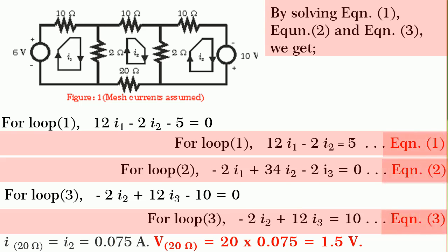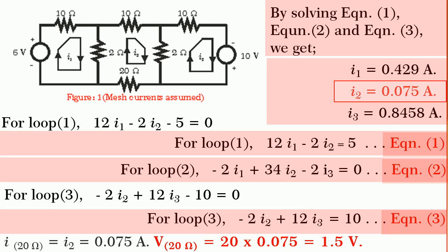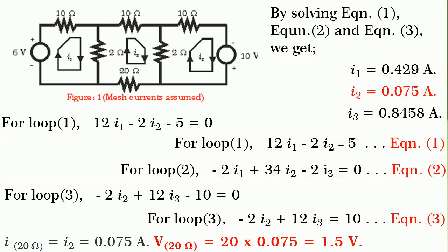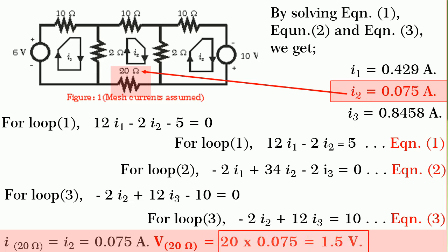By solving the 3 simultaneous equations 1, 2 and 3, we get i1 is equal to 0.429 amperes and i2 is equal to 0.075 amperes and i3 is equal to 0.8458 amperes. But we know only i2 is flowing in 20 ohm resistance. Therefore, voltage across 20 ohm resistance is equal to 20 volts into 0.075 amperes which will give us 1.5 volts.